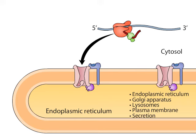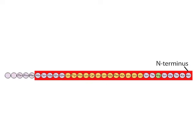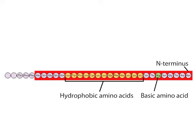In mammalian cells, most proteins enter the ER co-translationally. These proteins have an amino acid sequence called a signal sequence, which is typically located at the amino terminus of the polypeptide chain. Signal sequences span about 20 amino acids and include a stretch of hydrophobic amino acids preceded by a basic amino acid.